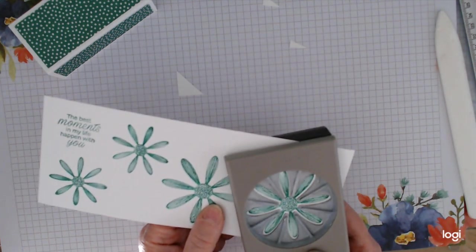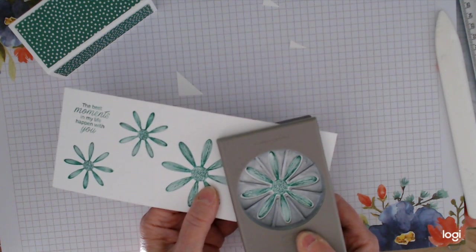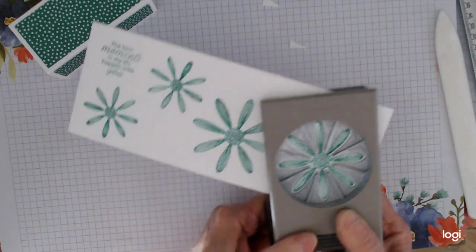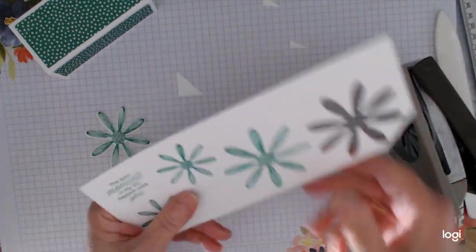And I have stamped them out already using Call Me Clover, and I'm going to punch them using the matching punches. Always cut that corner off so that you can get your punch right in there, because you want to make sure you get all your leaves nice and—